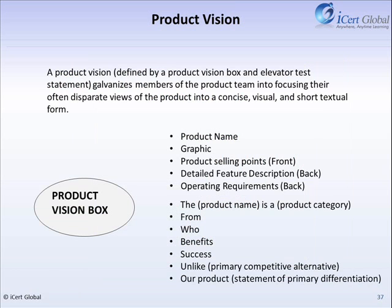Product Vision: the first stage in an Agile project is defining your product vision. The product vision statement is an elevator pitch, which is a quick summary about the product.